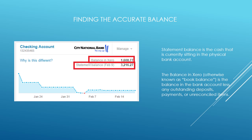The way that shows up is a lot of times you will see this difference when you're inside Xero. You'll see your balance in Xero and then you'll see your statement balance, and those things are different. A lot of times we get that question — why are these two things different? The statement balance is the cash that is currently sitting in the physical bank account. But the balance in Xero also factors in outstanding deposits, outstanding payments, and unreconciled items. If those are different, it could be that things aren't reconciled, or that there are deposits and payments that are outstanding and are going to be settled, which will impact the statement.